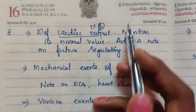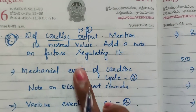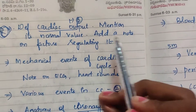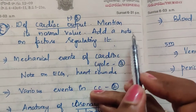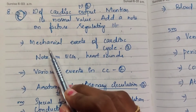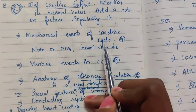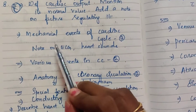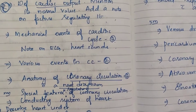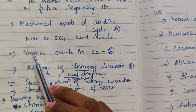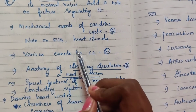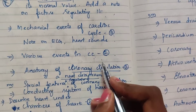Eighth one: cardiac — this is a very important topic. Define cardiac output, mention its normal value, and add a note on factors regulating it — that is 15 marks. Cardiac output also appears as a 5-mark question, so two times total. Mechanical events of cardiac cycle appears three times. Note on ECG, heart sounds, and various events in cardiac cycle also appear — this cardiac topic is very important.